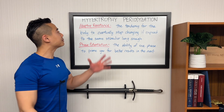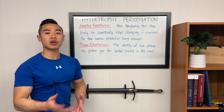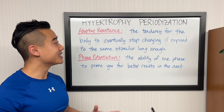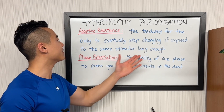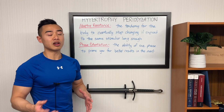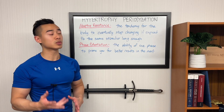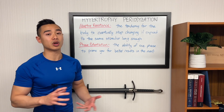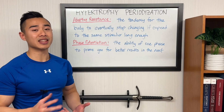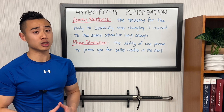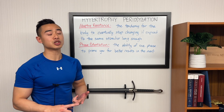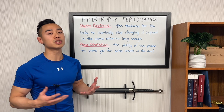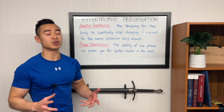Next let's talk about adaptive resistance and phase potentiation. These are important concepts for us to understand because they will drive our need for periodization. Adaptive resistance is the tendency for the body to eventually stop changing if exposed to the same stimulus for long enough. A lot of people who just use unweighted calisthenics will run into this problem. Think about a person who always does three sets of 30 push-ups for their chest training. At the beginning that is a novel stimulus and it will stimulate some hypertrophy, but eventually the body will grow enough in size and strength so that 30 push-ups for three sets is no longer a challenge. Once you get to this state the body will stop adapting because it doesn't need to, and thus your results will stall.